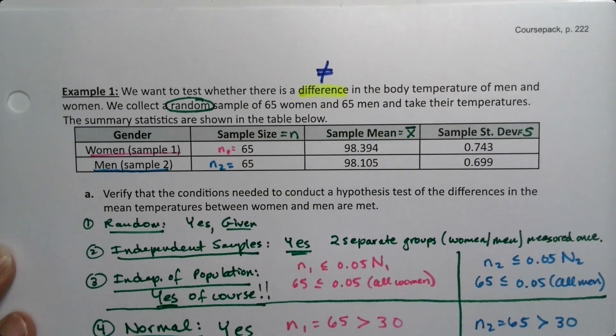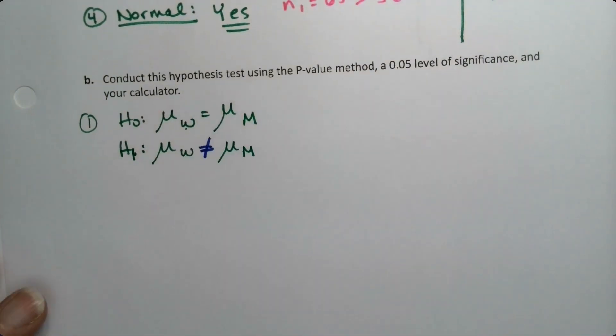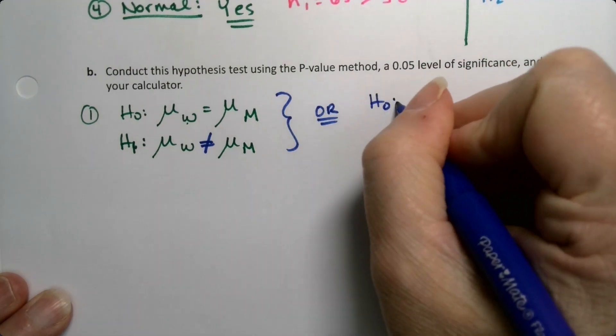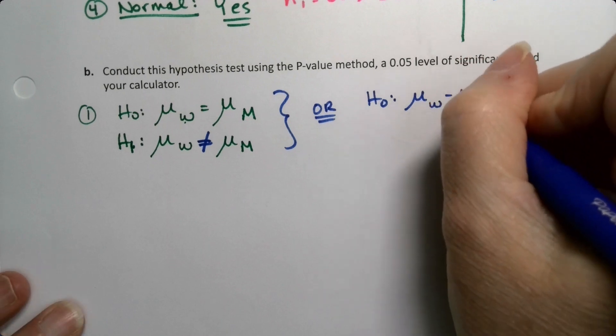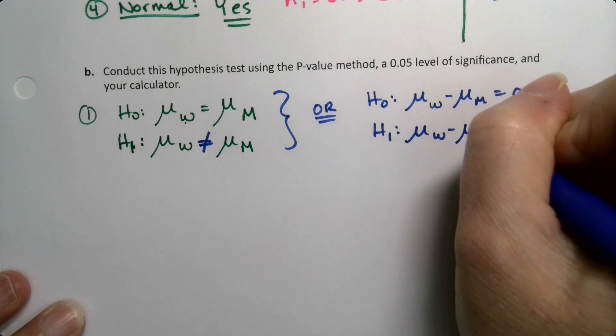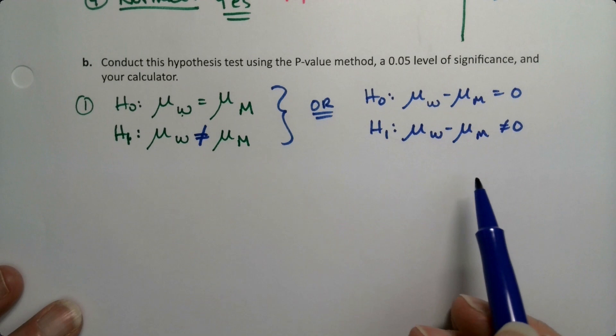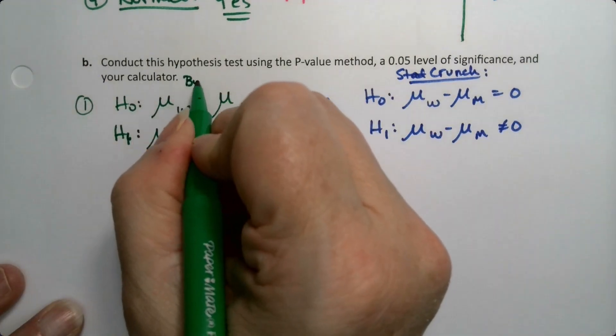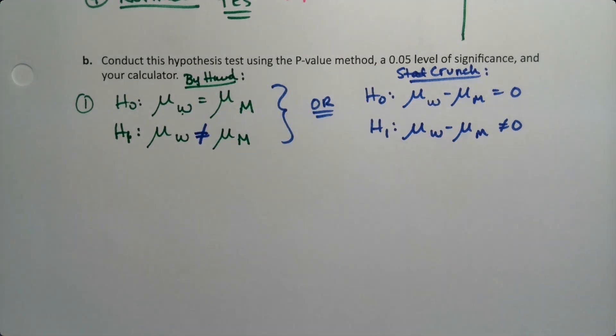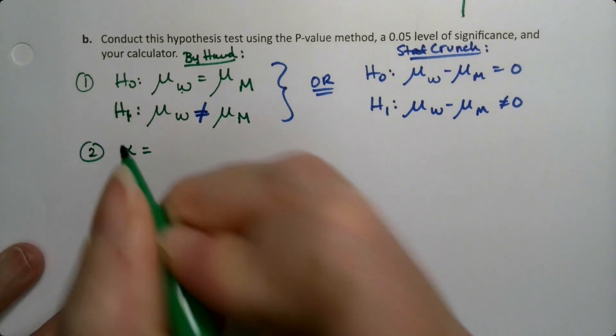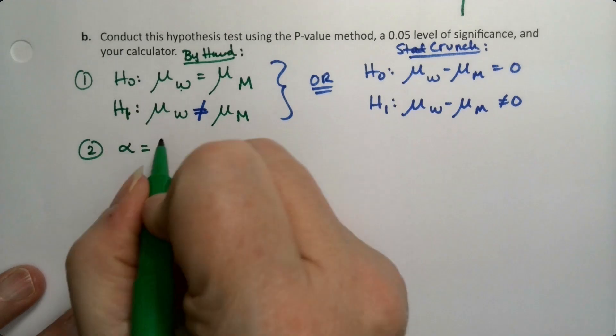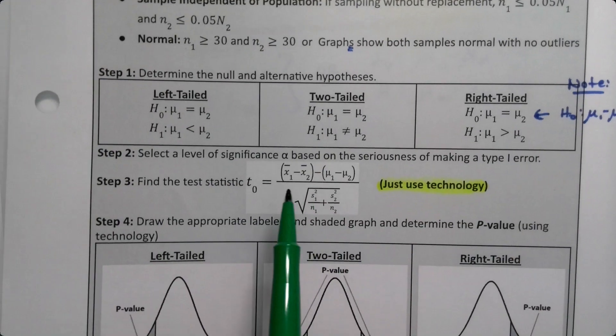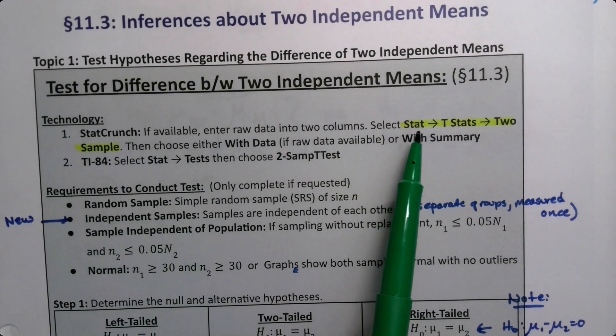Difference is not equal to, so this is a not equal to problem. There's another way to write these: you could also write it μ women minus μ men equals 0, μ women minus μ men is not equal to 0. Both of those are perfectly valid. StatCrunch tends to write it this way; we tend to write it the other way. They both mean the same thing. Step 2, alpha. Alpha is always given in the problem. It tells us that it's 0.05. Step 3, t0. There's a yucky formula, but we're not going to do it. We're just going to use technology, and technology is Stat, T Stat, Two Sample.